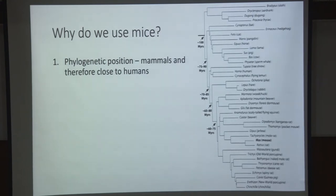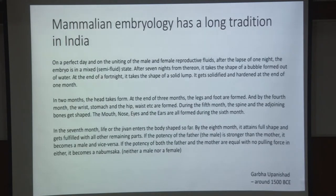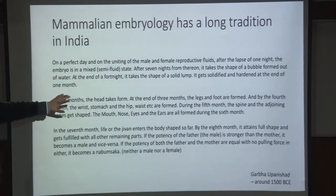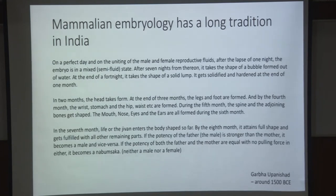This morning we were talking about Indian history and culture. Mammalian embryology has a deep-rooted tradition in India as well. This is from the Garbha Upanishad, which is actually one of the first recorded embryological observations — on human embryology. The first two paragraphs contain very nice observations, while the last paragraph has less scientific observation and more guessing. It suffices to say that mammalian embryology has a long tradition in India.